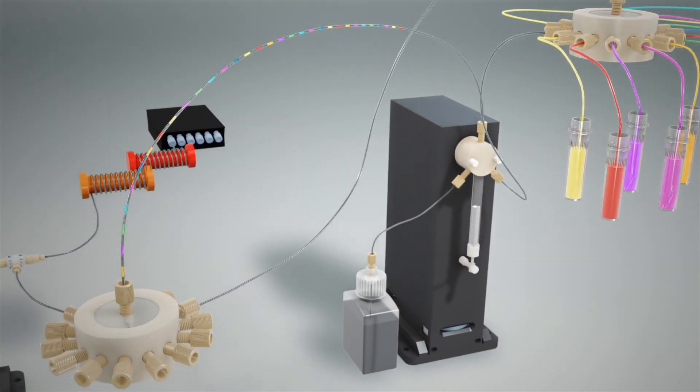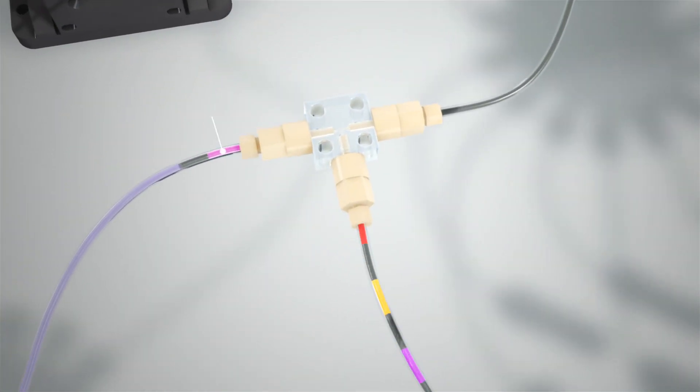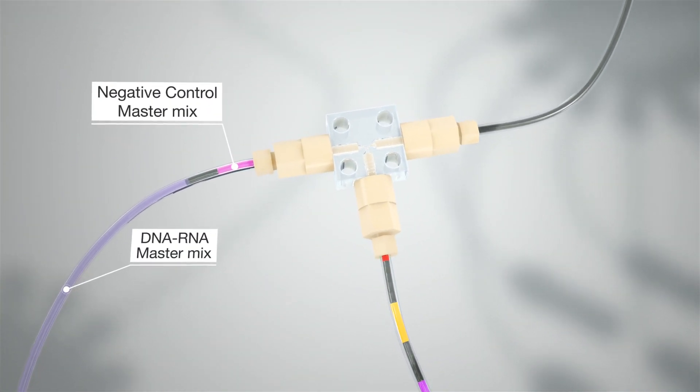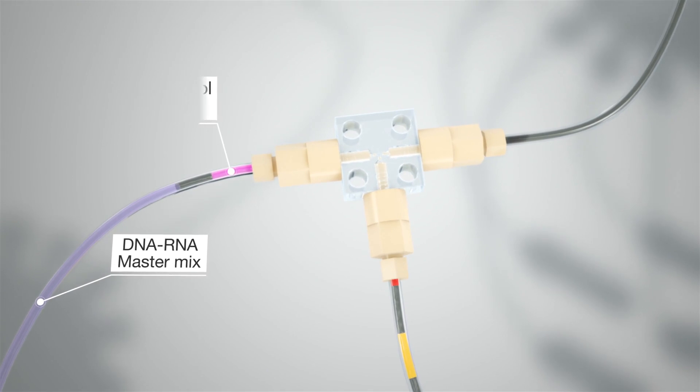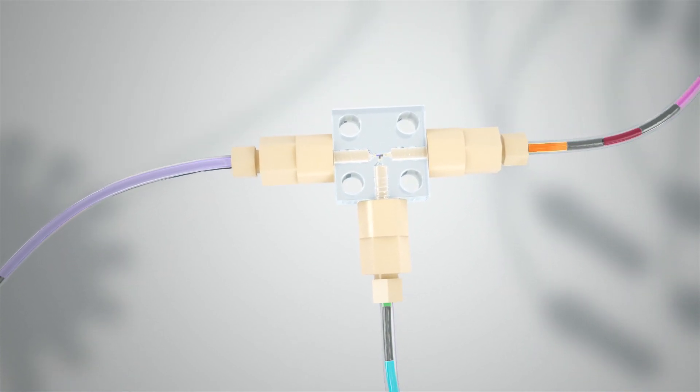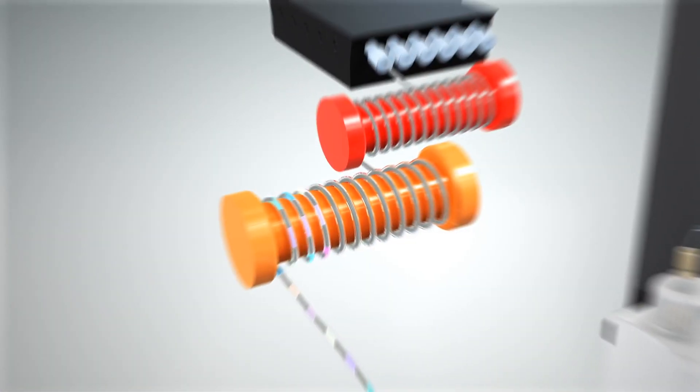The instrument delivers this reagent train to a T-junction where the instrument combines the negative control with the first assay slug and the DNA and RNA containing master mix with the remaining 11 assay slugs.